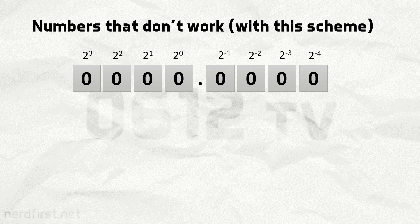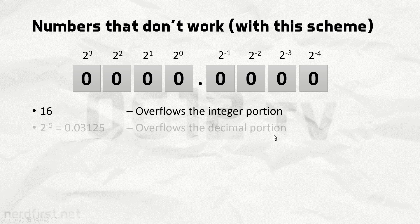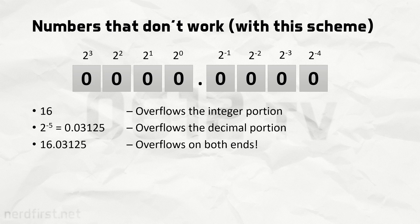But that's just because I chose an example that worked. Let's look at numbers that will not work with this simple fixed point scheme. Starting with something like 16 — clearly you can't do that because you only have 4 integer bits, so the biggest number you can represent is 15; there is an overflow. The same idea applies on the decimal portion as well. If you want to represent 2 to the power of negative 5, you're out of luck because there is no such bit. You can get overflows on both ends.